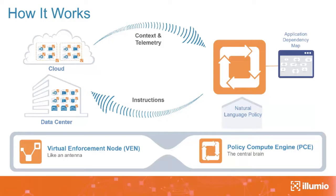This creates a virtuous cycle. Any change to a workload changes the telemetry going back to the Policy Compute Engine, which compares changes to the security policy, recalculates the correct rules, and pushes them down to the workload firewalls. Security is dynamic, automated, and constantly up-to-date. Because the Policy Compute Engine is API-driven and policy is label-based, it's easy to automate segmentation policy using common automation frameworks — meaning security segmentation can keep up with DevOps workflows.